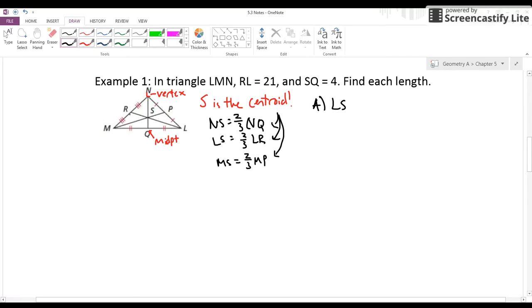Well, the entire thing LR is 21, and I know that LS is two-thirds of LR, so all I'm going to do is plug in that value, 21, for LR. And then two-thirds times 21 is going to give me 14 units.